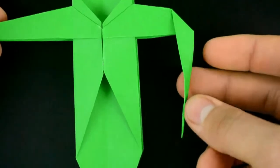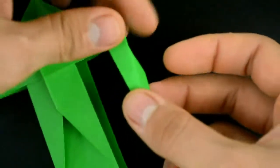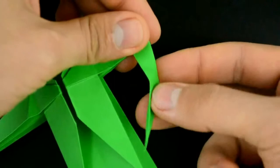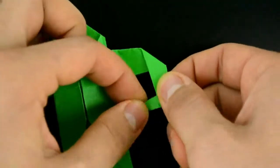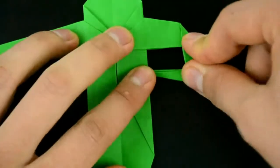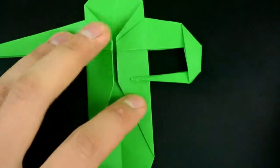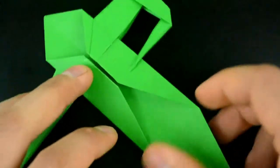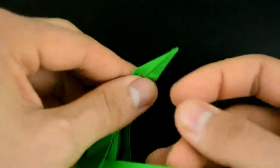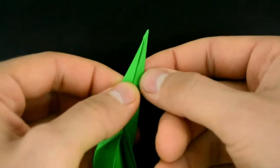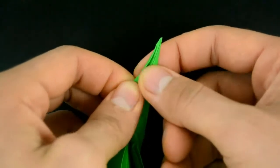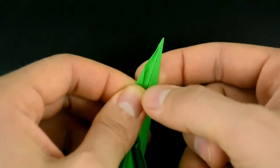And the same on the other creases. Again, just a reverse fold on these creases. Now undo the second reverse fold. And for a better result, just slide out the first two layers. That way.